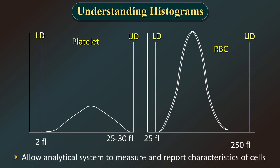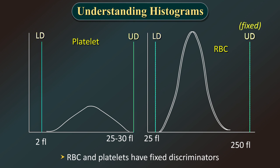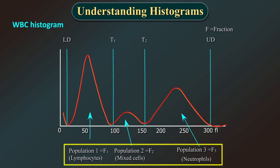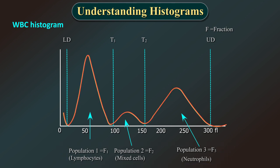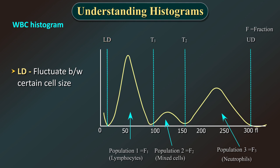Discriminators allow the analytical system to measure and report the characteristics of cells that fall between them. These discriminators can be fixed or floating. Generally, RBCs and platelets have fixed discriminators. The WBC histogram has three curves between the upper and lower discriminators, denoting lymphocyte, mixed, and neutrophil populations respectively from left to right. These cells cannot form a single bell curve as the sizes differ per WBC type. The lower discriminator is allowed to fluctuate between a certain cell size, say 30–60 FL, while the upper discriminator is fixed.